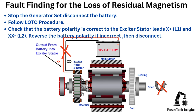Fault finding for the loss of residual magnetism. Stop the generator set and disconnect the battery. Follow lockout/tagout (LOTO) procedure. Check that the battery polarity is correct to the exciter stator leads X-plus and XX-negative. Reverse the battery polarity if incorrect, then disconnect.